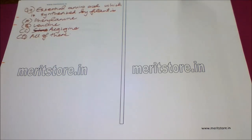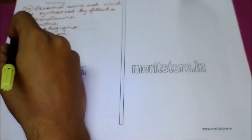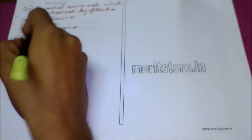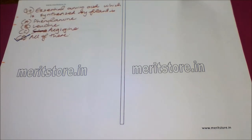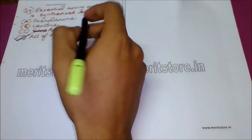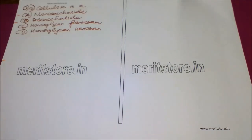Our next question is: essential amino acids which are synthesized by plants are — Option A: phenylalanine, Option B: leucine, Option C: arginine, Option D: all of these. The correct answer is Option D: all of these, because all of these amino acids are essential and are produced by the plant.